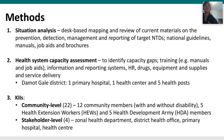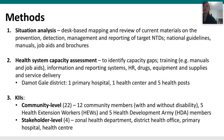For the situation analysis, we did a desk-based mapping and review of current materials including national NTD guidelines, manuals, job aids, and brochures. The health system capacity assessment used a structured questionnaire on a digital platform called Comcare, administered at one primary hospital, one health center, and five health posts. Questions covered staff training, availability of manuals and job aids, information and reporting systems, HR, drugs, equipment, and service delivery gaps. We also did 22 key informant interviews at community and stakeholder level — including community members with and without NTD-related disability, health extension workers, and health development army members.